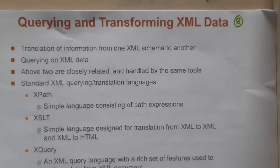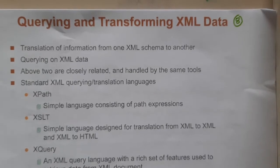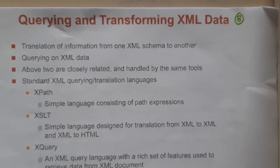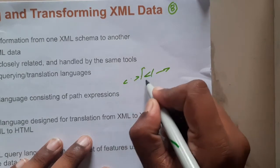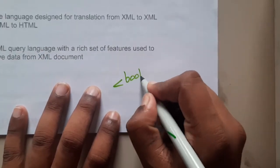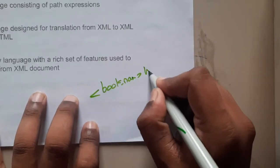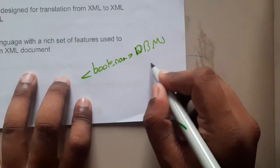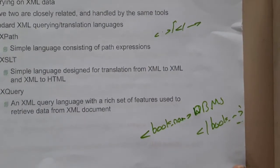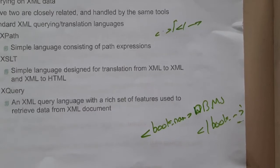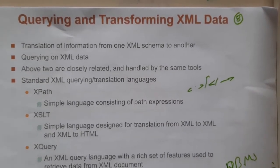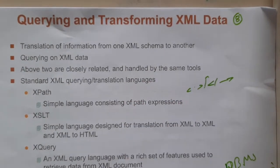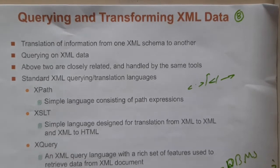Hello, in this lecture let us discuss about querying and transforming XML data. In our last few lectures we discussed how data is represented in between tags. For example, inside 'book_name' you write the book name like 'DBMS', then close the tag. Reading XML by a human is easy, but how can a query language or SQL access it and store it into a database? There are three important methods to get data from XML.